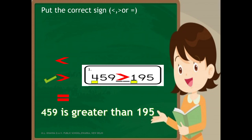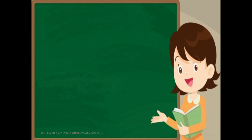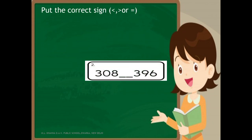Next question: compare 308 and 396. Start by comparing the leftmost digit. The digits at the hundreds place are the same, so we move to the tens place. Here, 0 tens are less than 9 tens. That means 308 is less than 396.